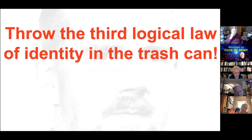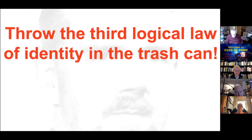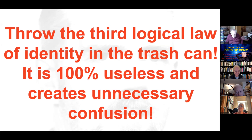There's a punchline: in logic there is something called the third logical law of identity. It was in the making since Leibniz, but William Jevons apparently declared it a law in the 19th century. A whole mythology developed around it — the 'missing law' that Aristotle didn't articulate. But I would go the opposite direction and say it is 100% useless, and that is the reason we have a clash of civilizations — because that law has somehow interrupted things.